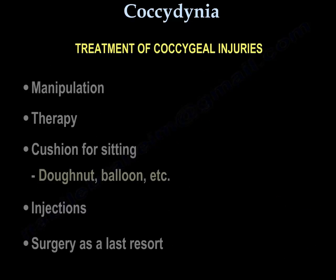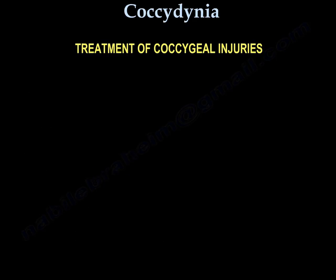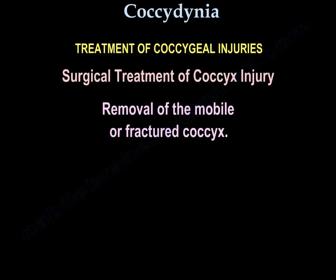Treatment of coccygeal injuries includes manipulation, therapy, a cushion for sitting such as a donut or balloon cushion, injections, and surgery as a last resort. In surgery, the mobile or fractured coccyx is removed.